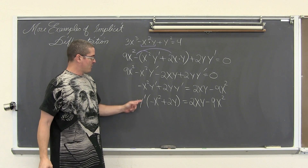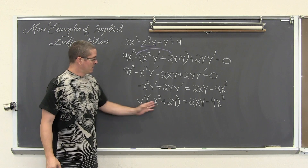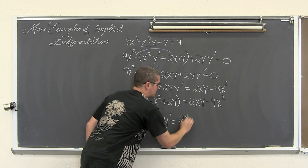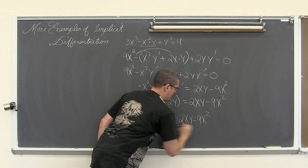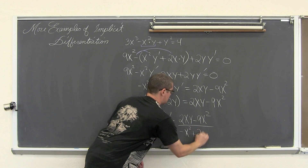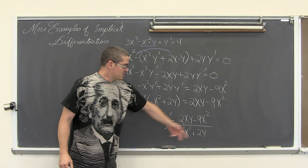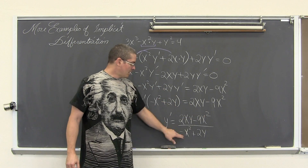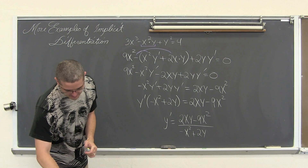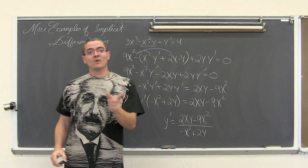Each of these terms both have a y prime. We want to factor that out because you can't solve for a variable when it shows up in multiple places. So we factor and get y prime times (negative x squared plus 2y) equals 2xy minus 9x squared. Dividing both sides gives us y prime equals (2xy minus 9x squared) over (negative x squared plus 2y).